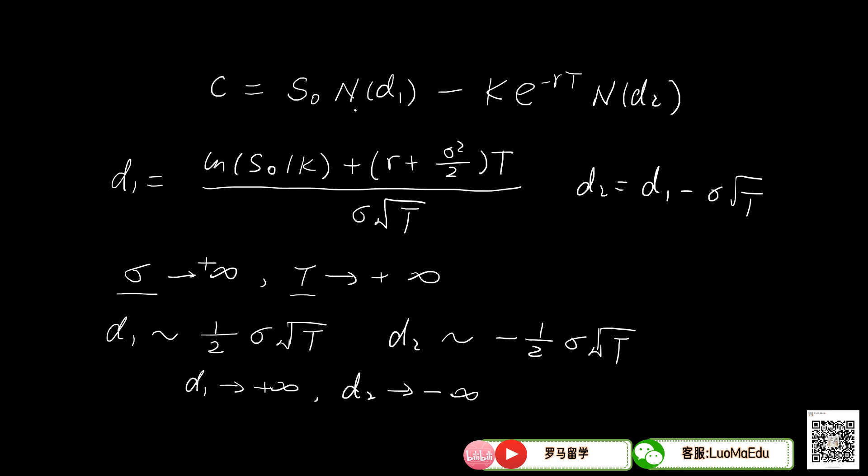So in this case, N(d1) will be close to one, and N(d2) will be close to zero. Now we have the final answer. Your call option will be equal to S0, which is your underlying asset price at time zero, which is consistent with our guess before.